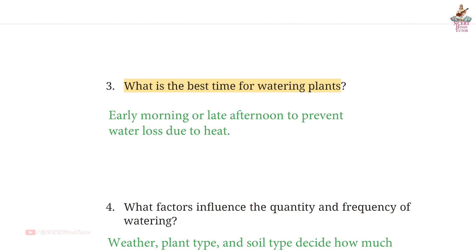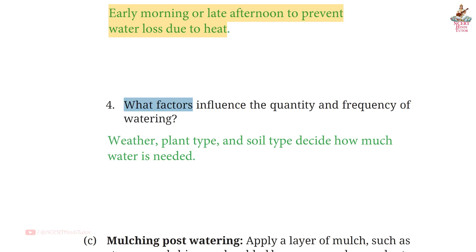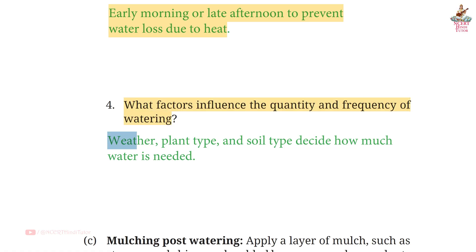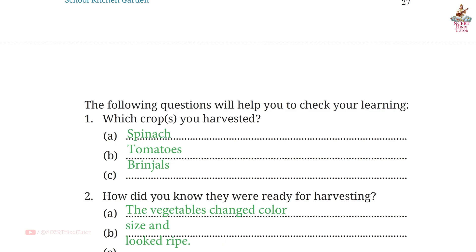Page 23, Question 3: What is the best time for watering plants? Answer: Early morning or late afternoon, to prevent water loss due to heat. Question 4: What factors influence the quantity and frequency of watering? Answer: Weather, plant type, and soil type decide how much water is needed.